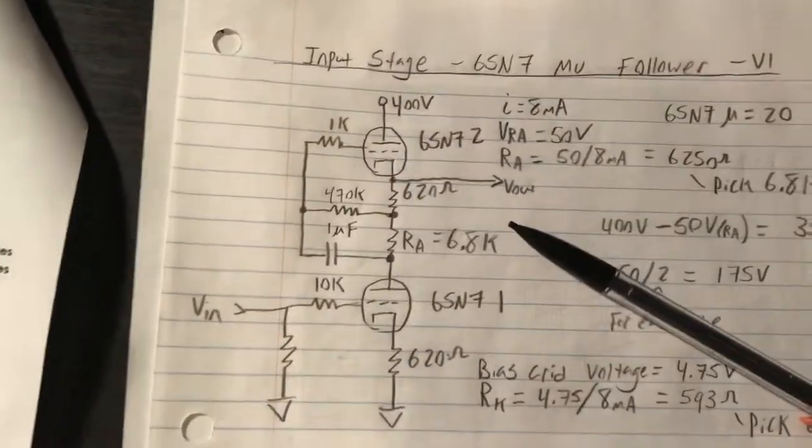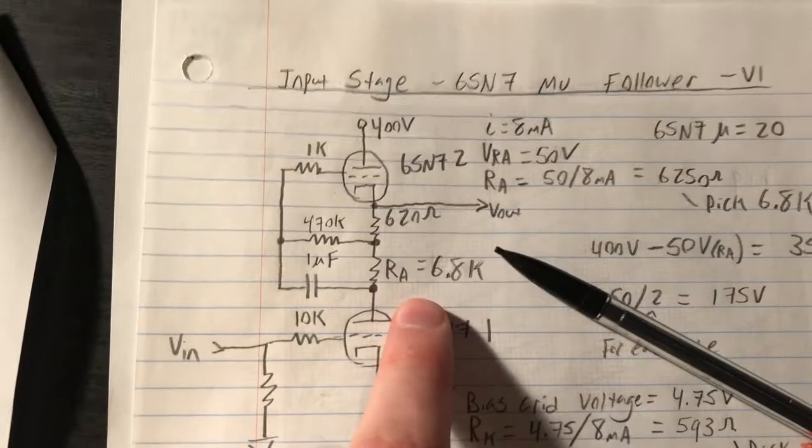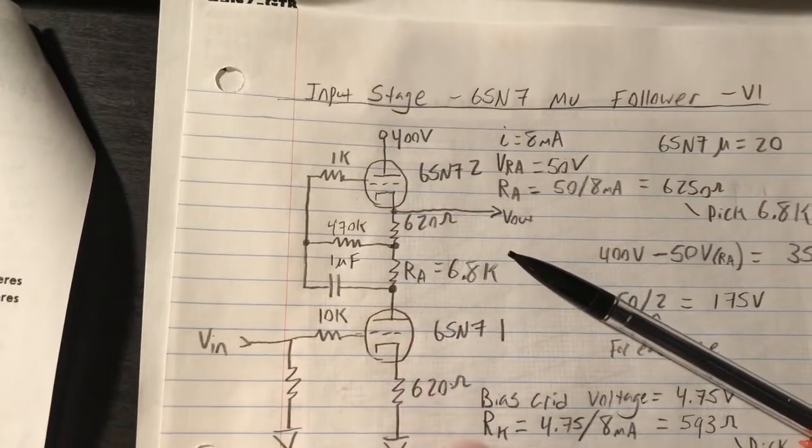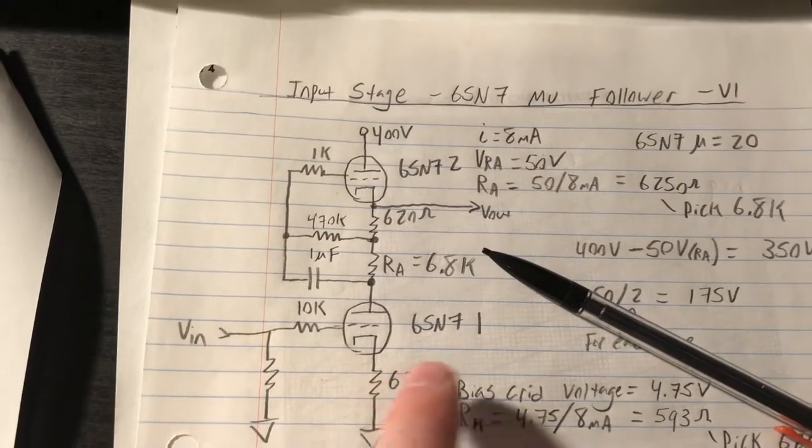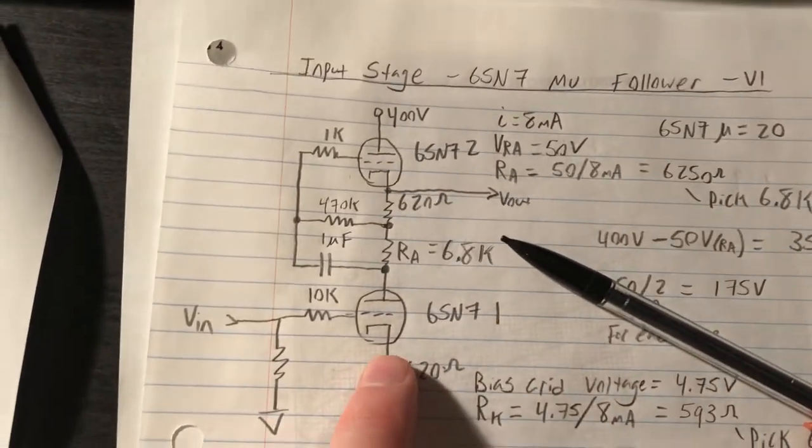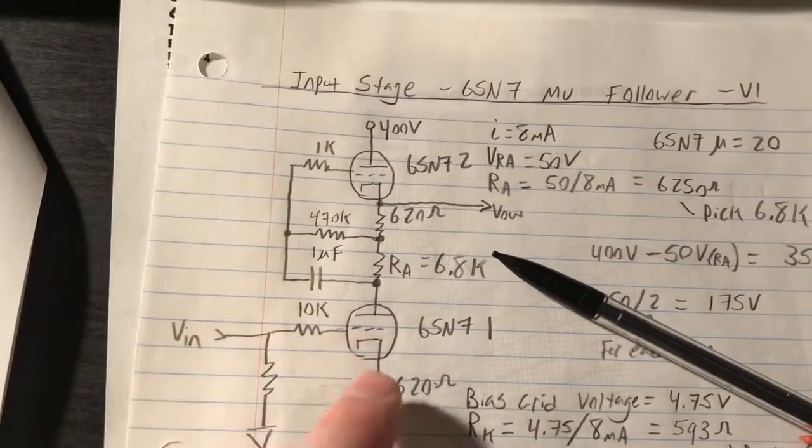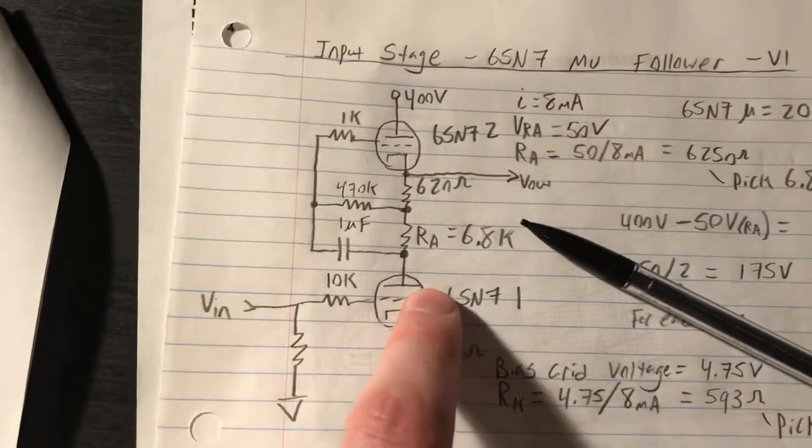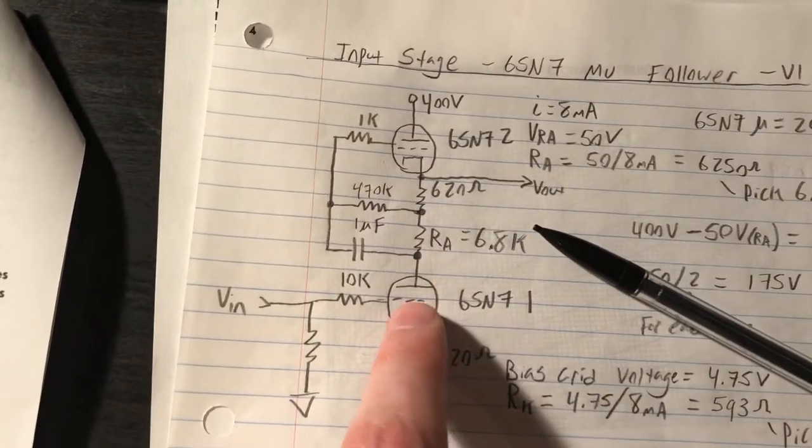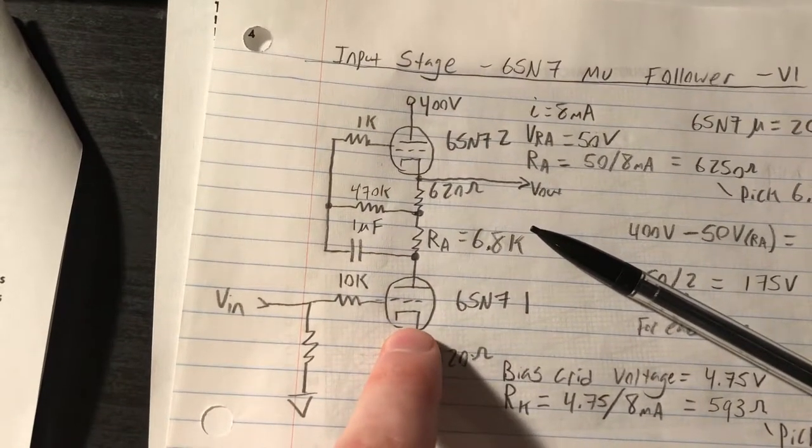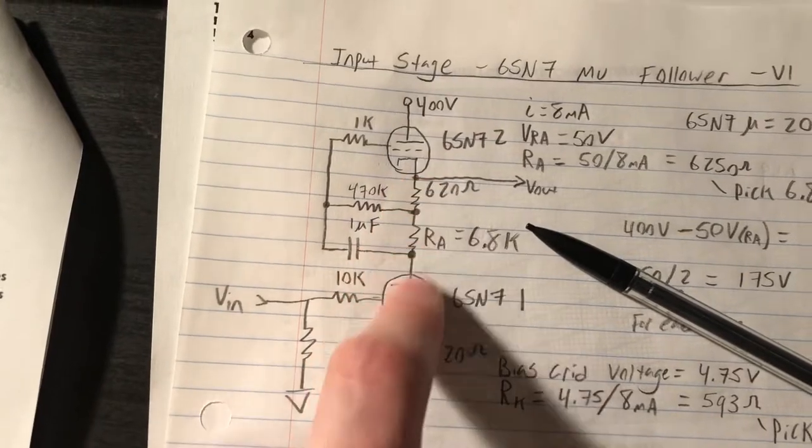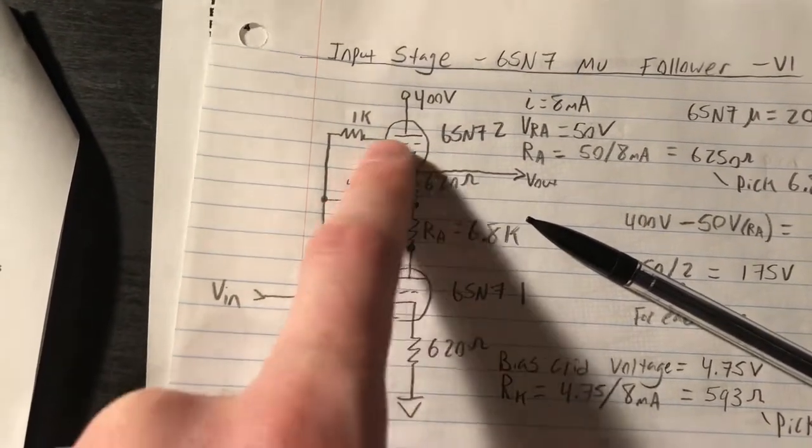It's kind of what's often termed, although it's a slightly different configuration, a shunt regulated push-pull amplifier. This is arranged in a special configuration called a mu follower. And essentially, what this arrangement does is this top tube acts as a constant current source for this bottom tube.